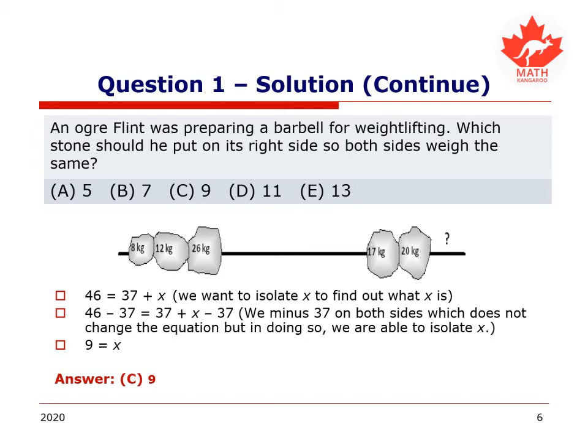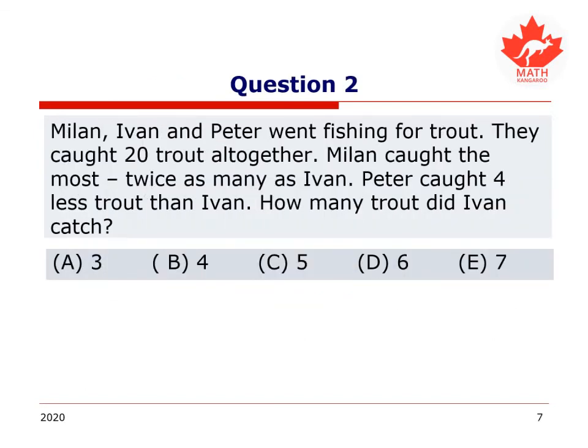Let's try another question. Milan, Ivan, and Peter went fishing for trout. They caught 20 trout altogether. Milan caught the most, twice as many as Ivan, and Peter caught four less trout than Ivan. How many trout did Ivan catch? Again, take a second, mull this over, think it through, come back once you have a solution.